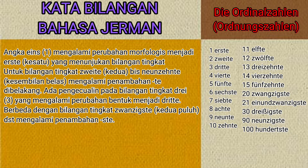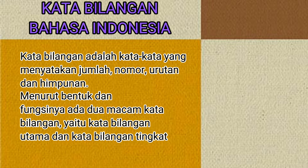Ke-eins mengalami perubahan morfologis menjadi Erste, atau ke-satu, yang menunjukkan bilangan tingkat. Untuk bilangan tingkat Zweite atau kedua, hingga Neunte atau ke-sembilan belas, mengalami penambahan akhiran -te di belakang. Ada pengecualian pada bilangan tingkat Drei yang mengalami perubahan bentuk menjadi Dritte. Berbeda dengan bilangan tingkat Zwanzigste dan seterusnya yang mengalami penambahan akhiran -ste.